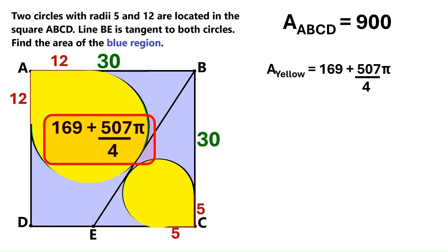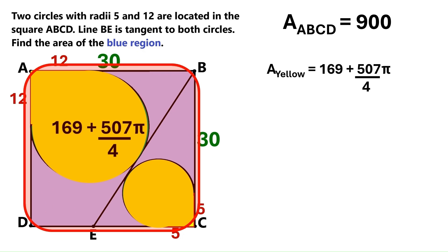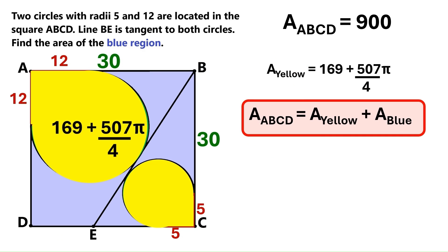What an ugly number! Now it's pretty clear that this yellow region plus this blue region would give us the area of this entire square. And we can put it as an equation like this. We already know that the area ABCD is 900. So let's change this to that.